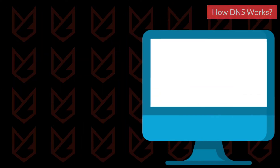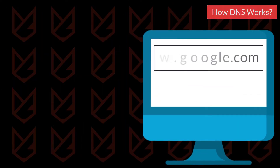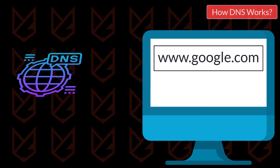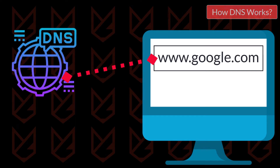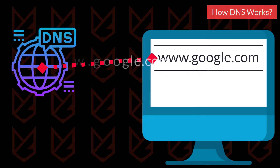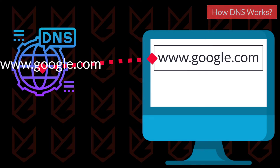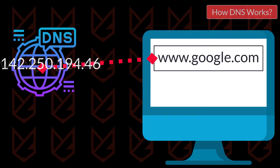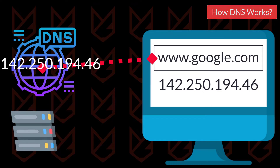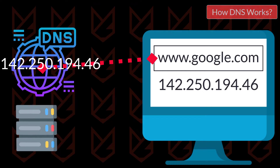For example, to open google.com, you enter it in the browser. Your browser contacts the DNS server to find its IP address. The DNS server searches for google.com on its list and sends the IP address of its server. Then your browser will send the rest of the queries to that IP address.